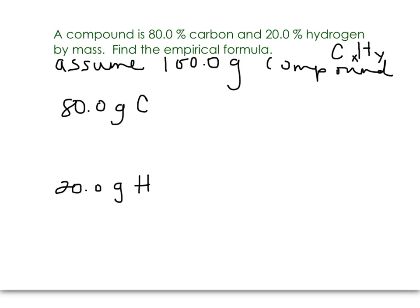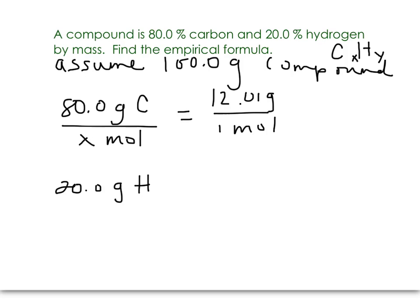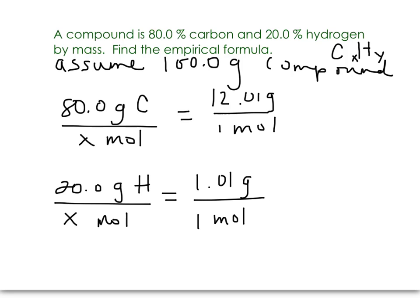We want to get these converted to moles, which we know how to do. We need our periodic tables so we can look at the molar masses. 80 grams of carbon divided by 12.01 grams per mole gives us the moles of carbon, and we do the same for hydrogen, whose molar mass is 1.01. Please remember to round your molar masses to two decimal places. We get 6.66 moles of carbon and 19.8 moles of hydrogen.